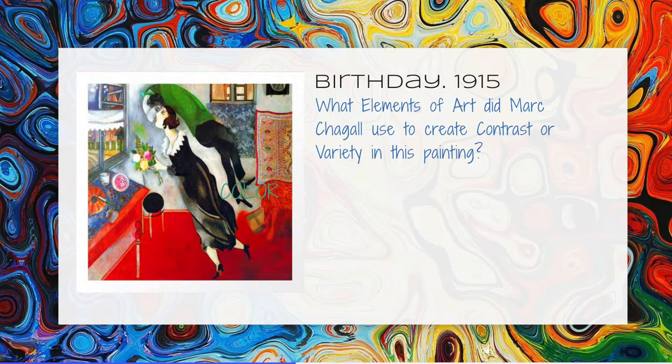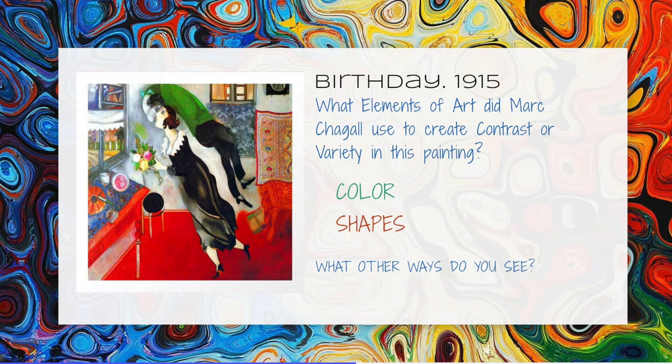In his painting Birthday, Marc Chagall used elements of art to create contrast and variety in his painting. He used color — red and green — which are complementary. He used shapes — organic and geometric. What other ways do you see?